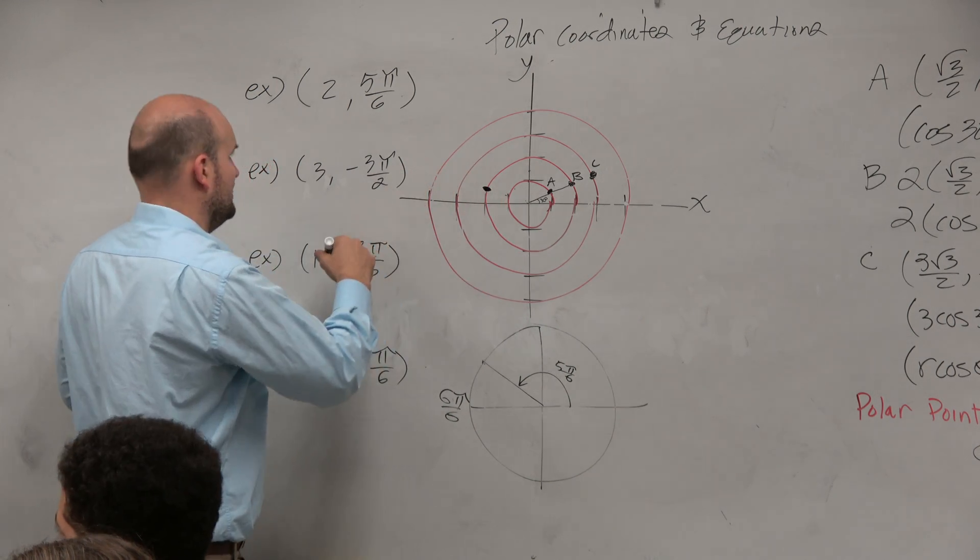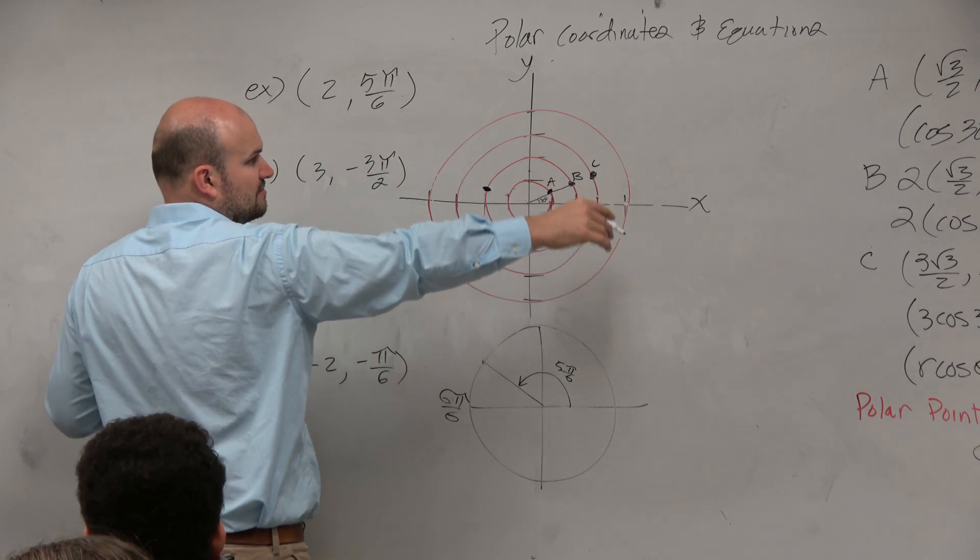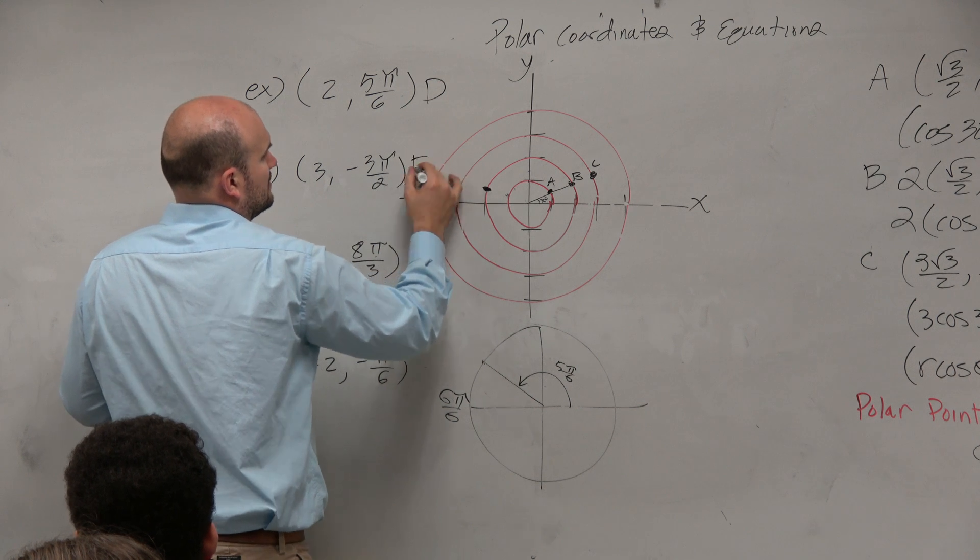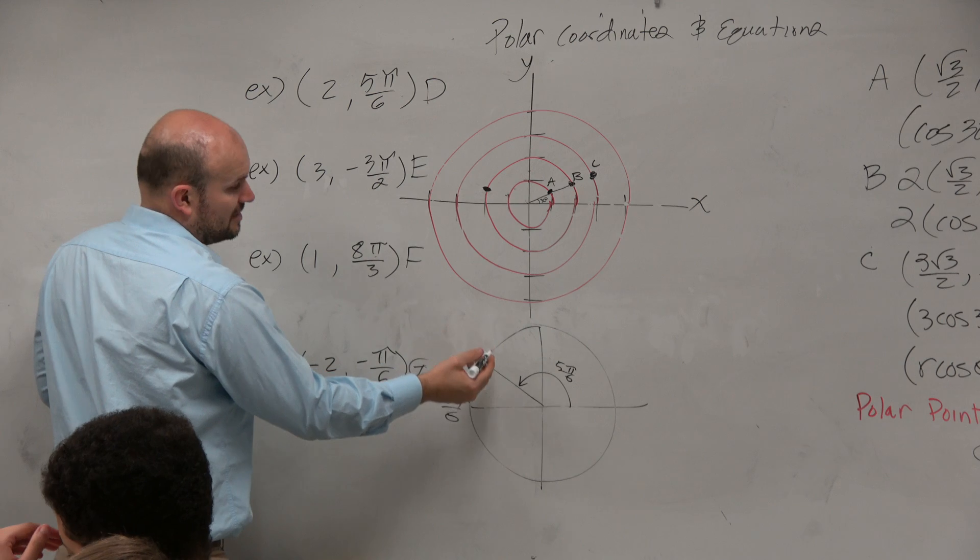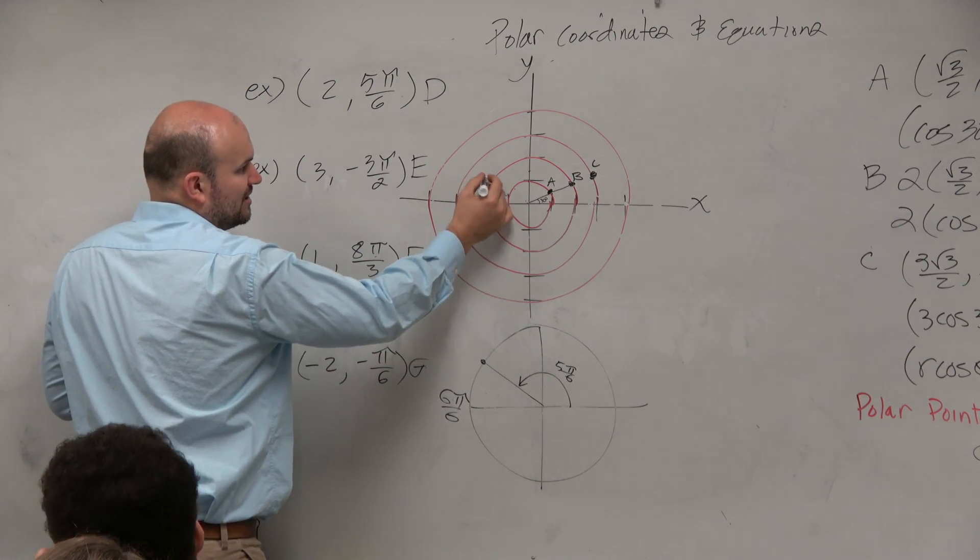And that would be, oh, I didn't label my points. Let's call this, what did I end up with? Let's see, so let's call this D, E, F, and G. So therefore, that's going to be point D.